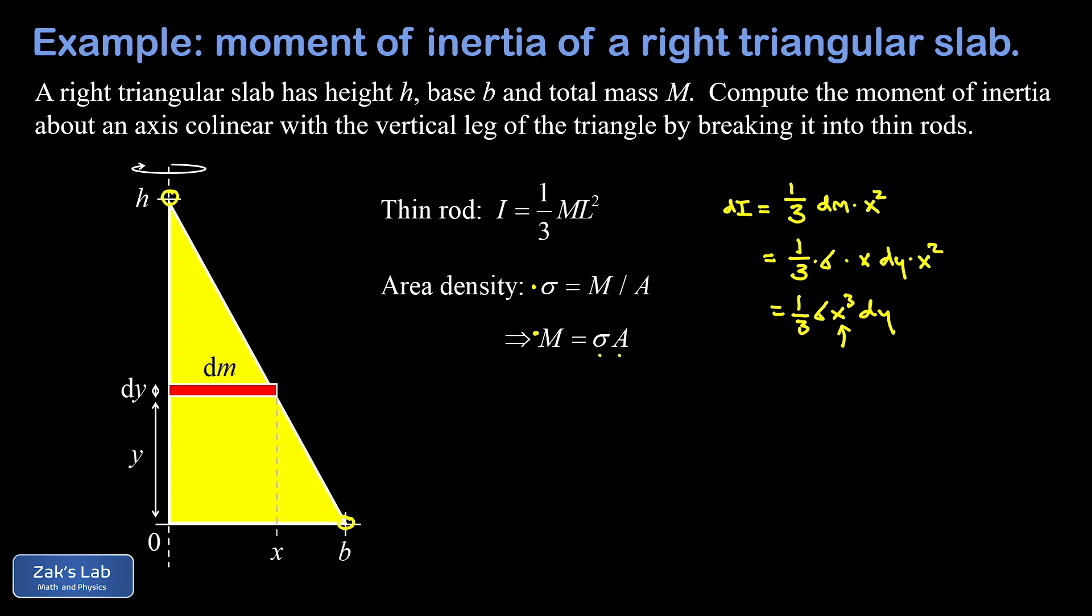I can think about this in slope-intercept form and say that y is equal to the slope - well that's rise over run and our rise between those two points is negative h while our run is b - times x and then plus the y intercept.